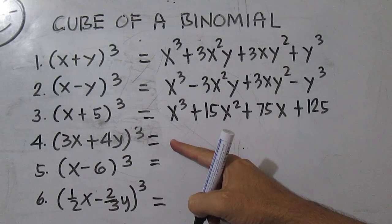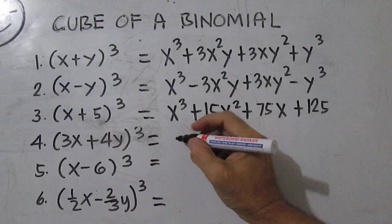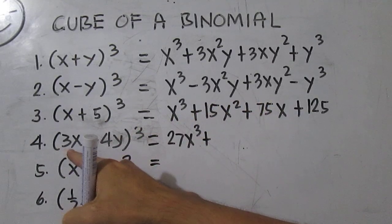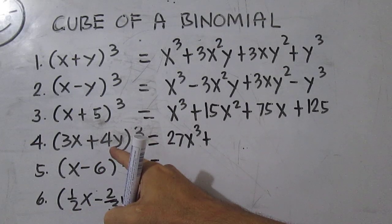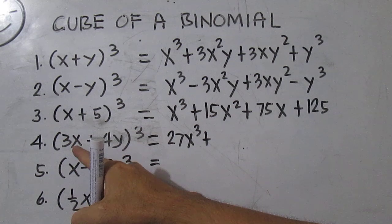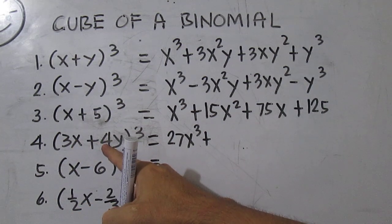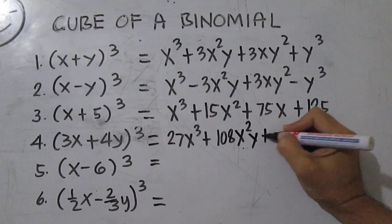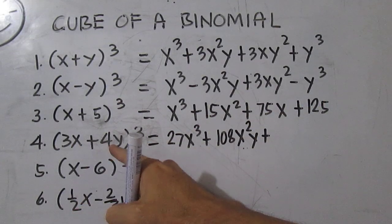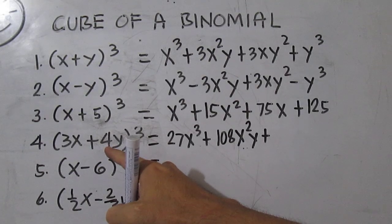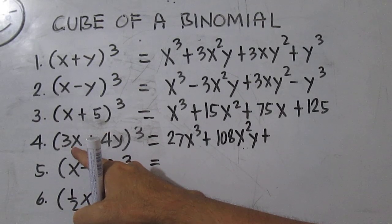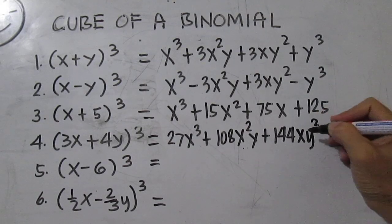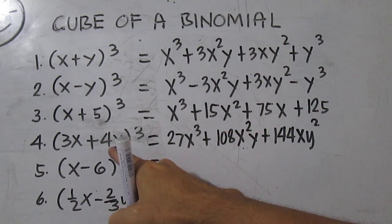Number 4: the cube of the first term is 27x cubed. Thrice the product of the square of the first term and the second term: 9 times 4 times 3 is 108x squared y. Thrice the product of the first term and the square of the second term: 16y squared times 3x times 3 is 144xy squared. And the cube of the second term: 4y times 4y times 4y is 64y cubed.